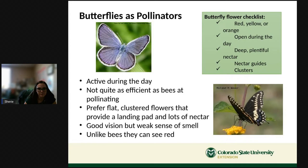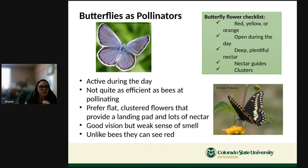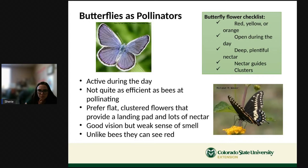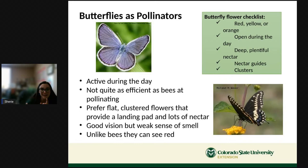Butterflies are pollinators. The flowers they prefer are red, yellow, or orange; open during the day; have deep, plentiful nectar; sometimes have nectar guides or coloring pointing toward the nectar; and are often in clusters so butterflies have a landing pad. Butterflies are active during the day and not quite as efficient as bees, but still do a good job. They have good vision but a weak sense of smell. Unlike bees, butterflies can see red — so they like red flowers.